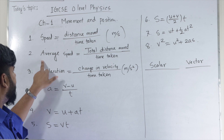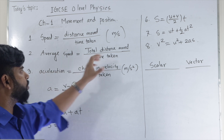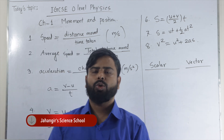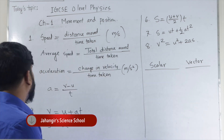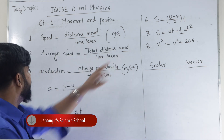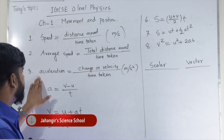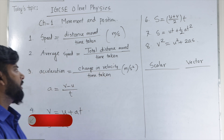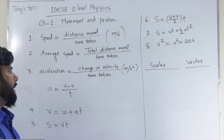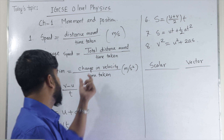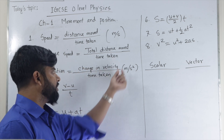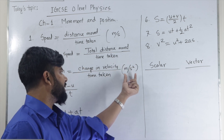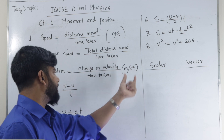On the other hand, average speed equals total distance moved divided by total time taken. The unit is the same — meters per second. Acceleration equals change in velocity divided by time taken. The unit: remember, change in velocity is meters per second, divided by another second, so the unit is meters per second squared.